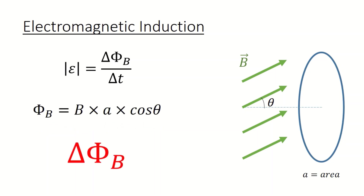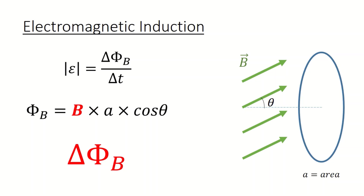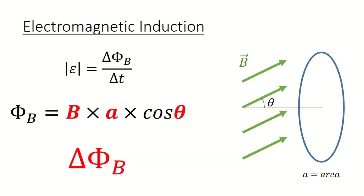So to change the magnetic flux, we have to change B, which is the magnetic field; A, the cross-sectional area of the loop; or theta, the angle between the magnetic field and the perpendicular to the area. Or you can do this by changing a combination of the three.